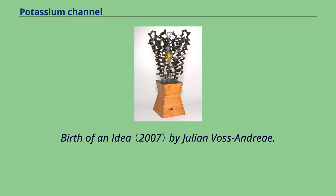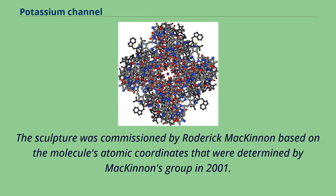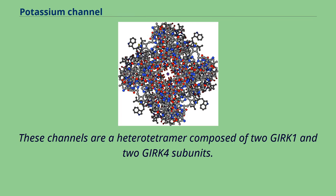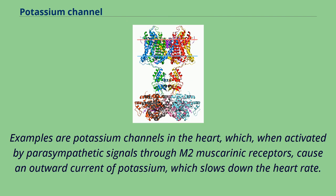The sculpture 'Birth of an Idea' by Julian Vos-Andrea was commissioned by Roderick McKinnon based on the molecule's atomic coordinates determined by McKinnon's group in 2001. Some types of potassium channels are activated by muscarinic receptors and are called muscarinic potassium channels. These channels are a heterotetramer composed of 2 GIRK-1 and 2 GIRK-4 subunits. Examples are potassium channels in the heart which, when activated by parasympathetic signals through M2 muscarinic receptors, cause an outward current of potassium that slows down the heart rate.